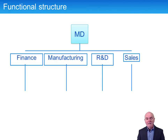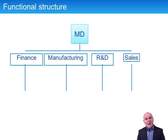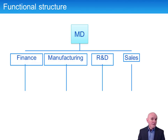Secondly, as businesses grow there is inevitably a degree of diversification — not necessarily going into radically different businesses, but having sales in Europe, North America, and Asia. The markets faced in those three areas are very different: different competitors, different pricing, different ways of advertising. Products may need to differ slightly and there may be different legal frameworks to comply with as well.